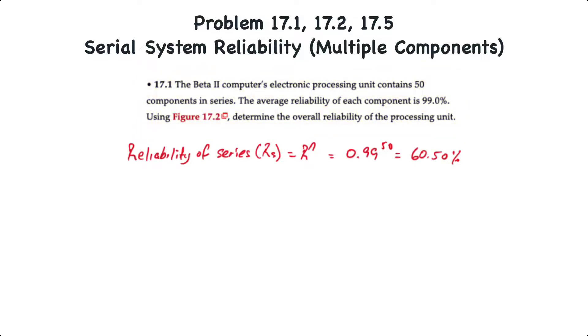Well, with components in series, the reliability of the series is equal to the reliability of each component to the exponent of n, or the number of components in series. That's equal to 0.99 or 99% to the power of 50 for a total overall system reliability of 60.5%.